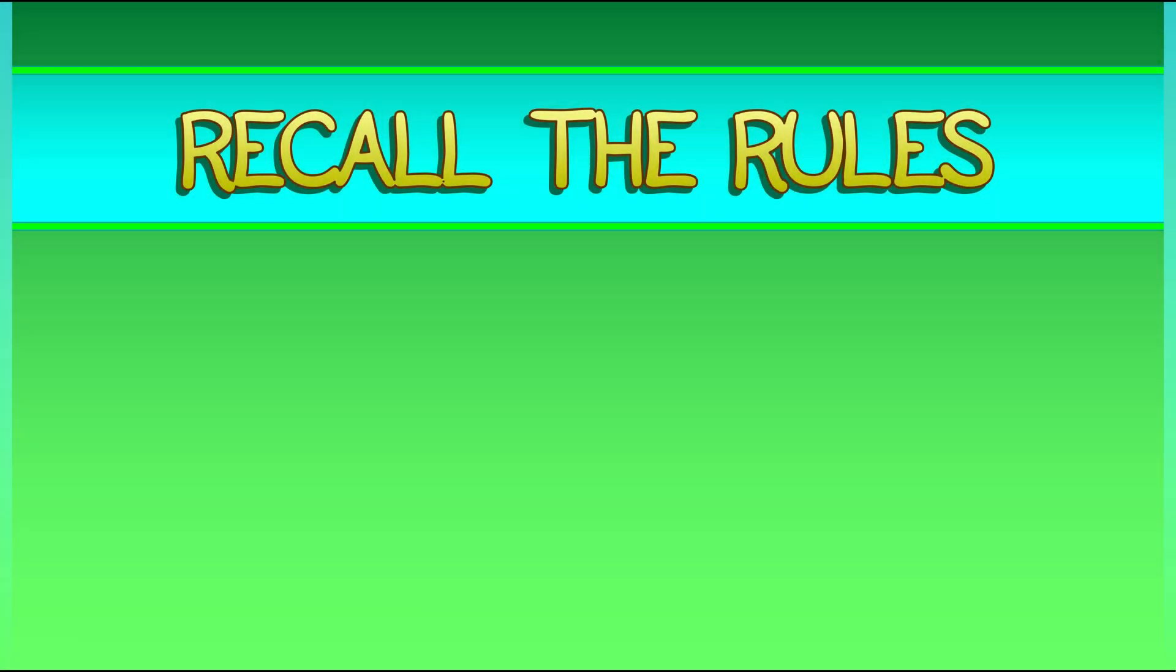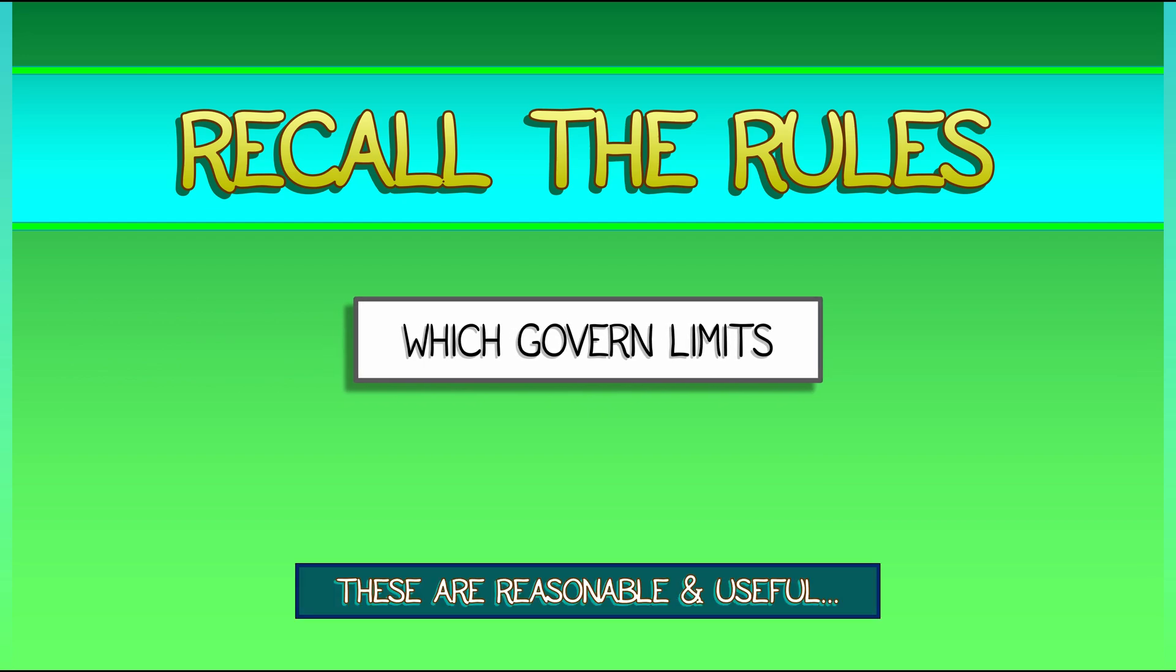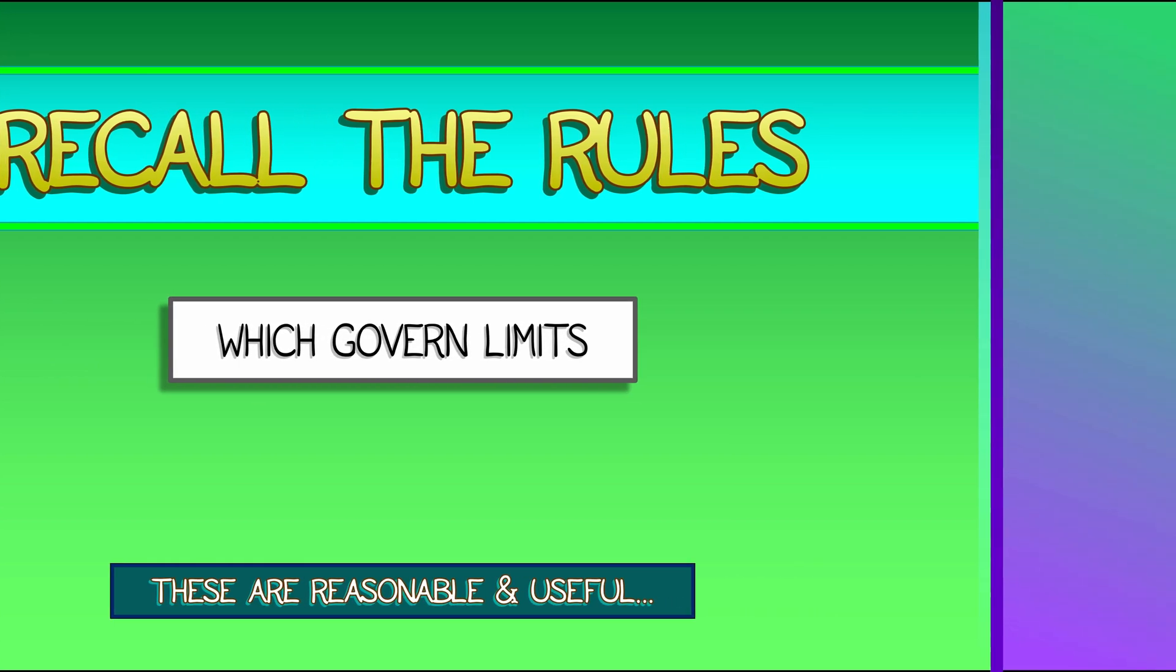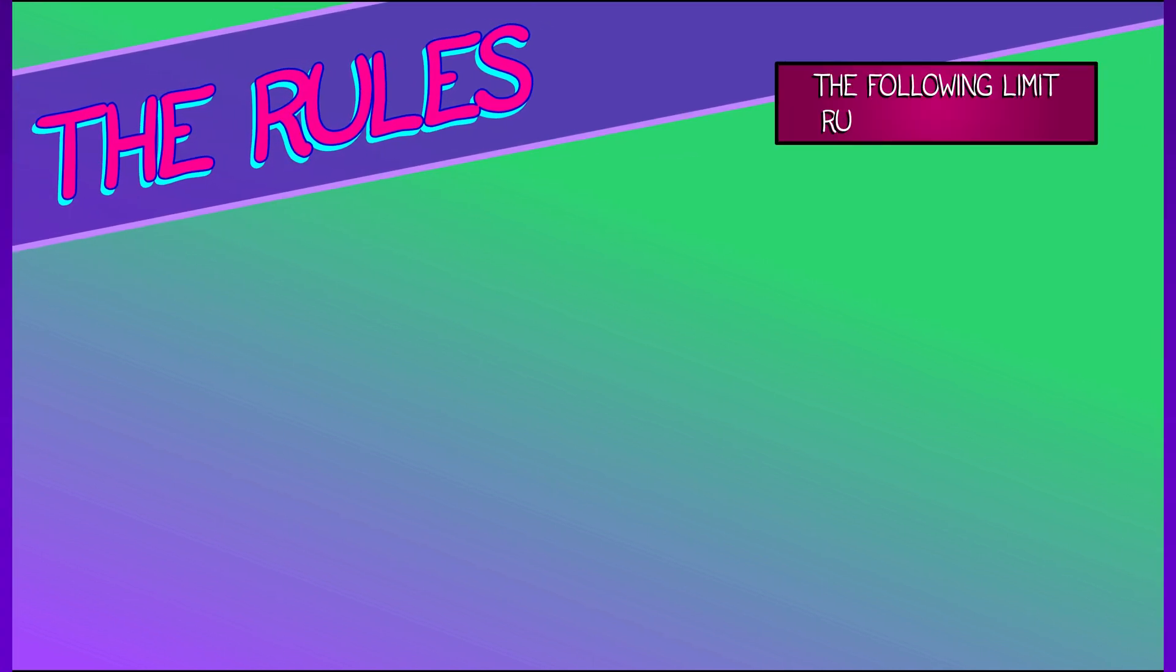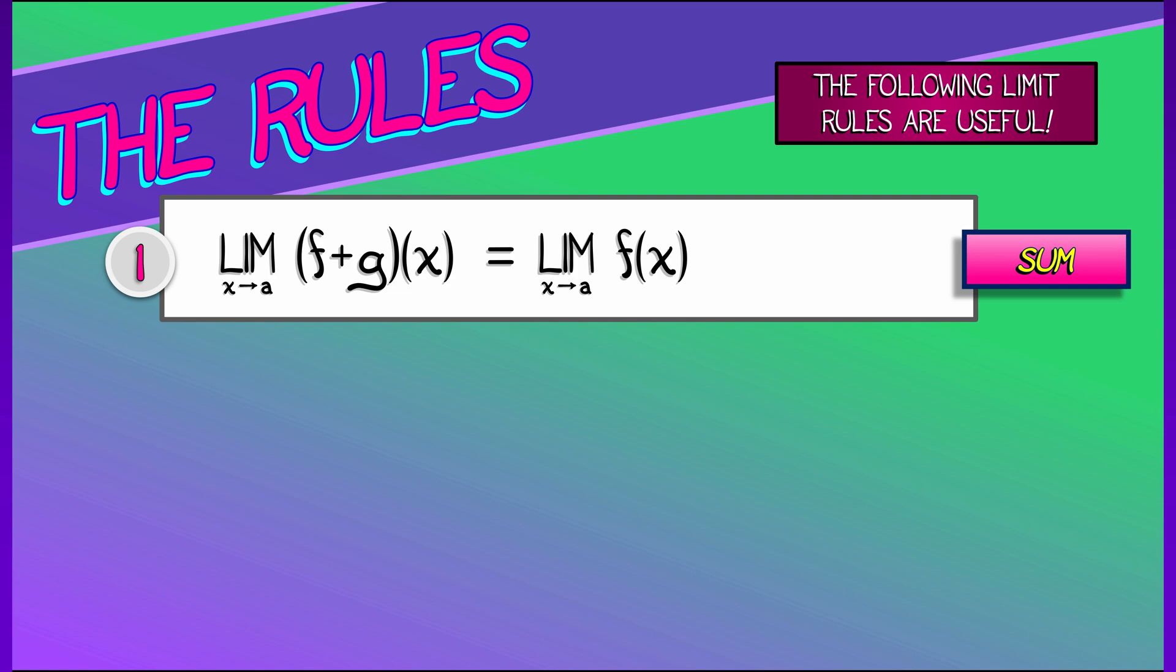There are certain rules that govern limits. These are going to be good for us to review. Let's recall the following very useful rules. The first rule for limits is something like a summation rule. If I have two functions, f and g, I take the limit as x approaches a of f plus g of x, then that evaluates to the limit of f as x goes to a plus the limit of g as x goes to a. That's the summation rule.